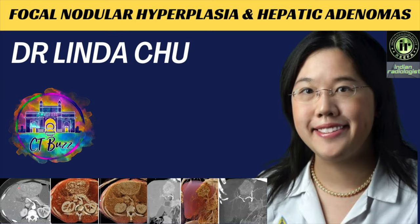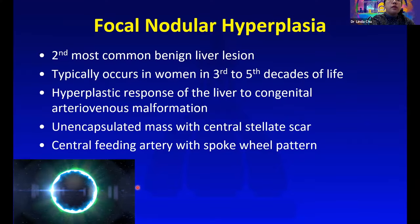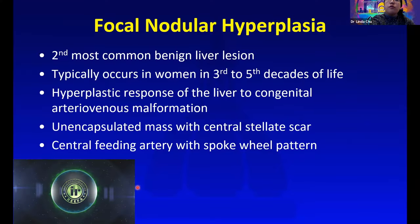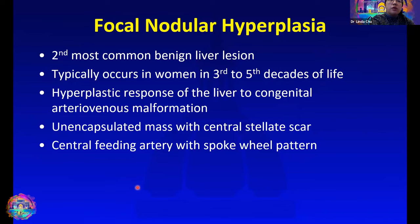Focal nodular hyperplasia is the second most common benign liver lesion. It typically occurs in women in the third to fifth decades of life, and it is due to a hyperplastic response of the liver to congenital arteriovenous malformation. On imaging, we see an unencapsulated mass with a central stellate scar, and we may also see a central feeding artery with a spoke wheel pattern, and if we see this, we can be pretty confident that it's a focal nodular hyperplasia.